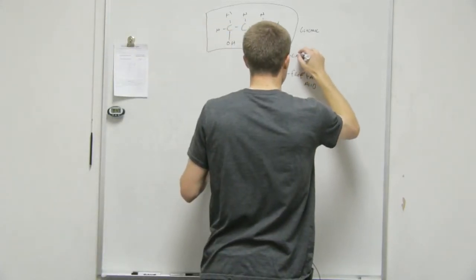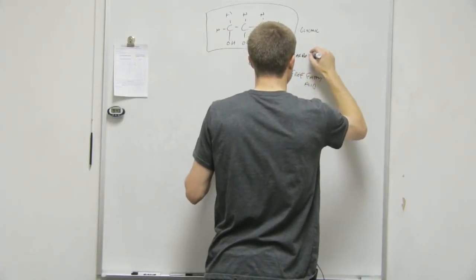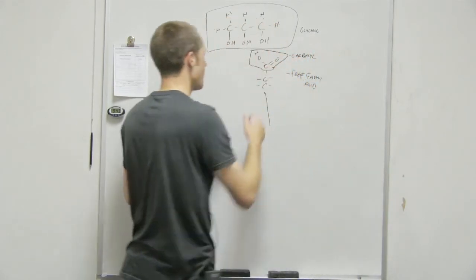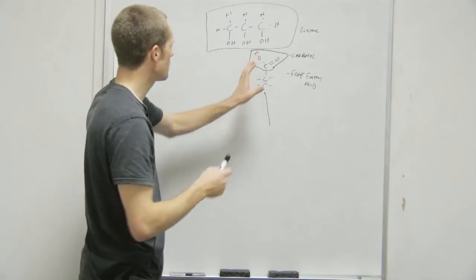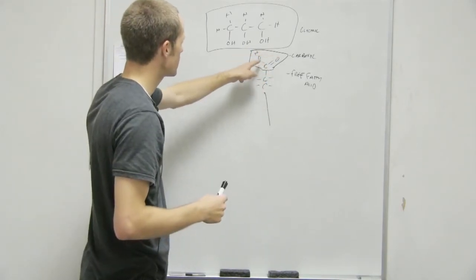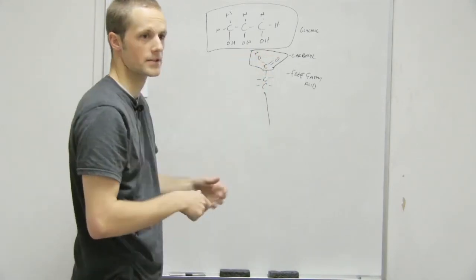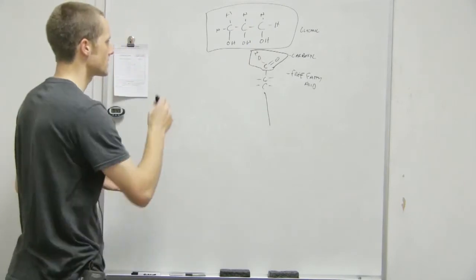This is the... because carboxyls have the double bonds with the oxygen, right? It's one carbon and two oxygens. That's what makes it... Yeah, so it's the double bond to the oxygen and the OH group coming off the same carbon. Yeah, that is the carboxyl.